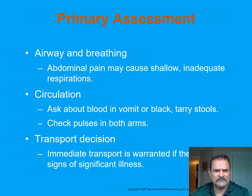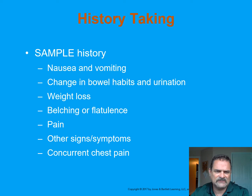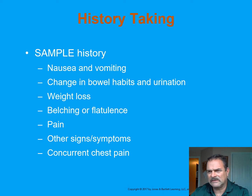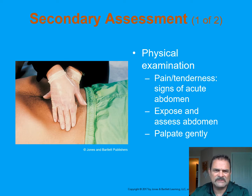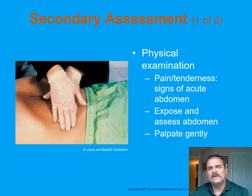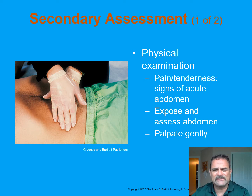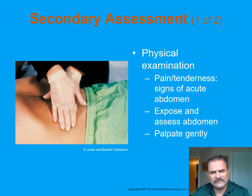Don't let patients refuse transport — they could bleed to death at home. For history taking, the SAMPLE history will often reveal nausea, vomiting, change in bowel habits and urination, weight loss, belching and flatulence, pain, and concurrent chest pain. For secondary assessment and physical exam, you may need to palpate the abdomen in all four quadrants. Start in the area that does not hurt first — if you touch the area that hurts first, the rest of the assessment is compromised. Have the patient point out where it hurts most and start your examination from outward in.